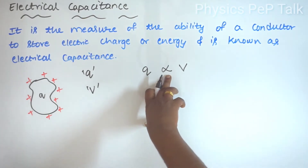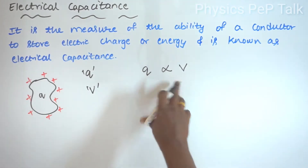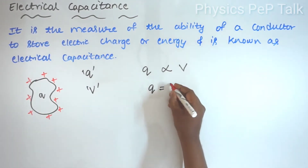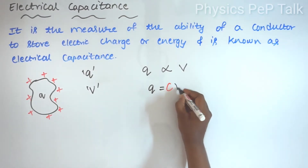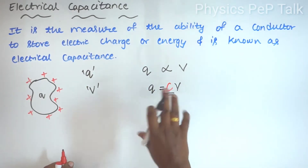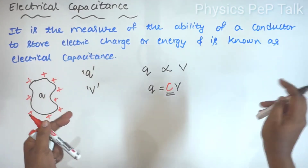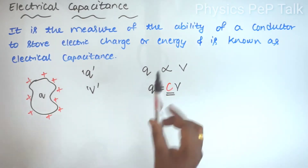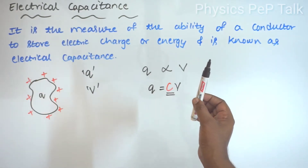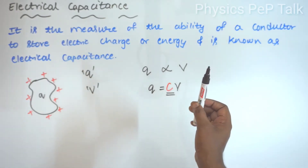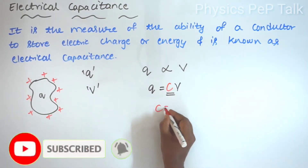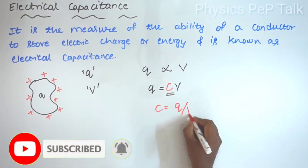The constant of proportionality gives us Q is equal to C times V. I will call this C the electrical capacitance of the body. It is the measure of the ability of a conductor to store electric charge. From this equation, C is nothing but charge divided by potential, that is C equals Q by V.